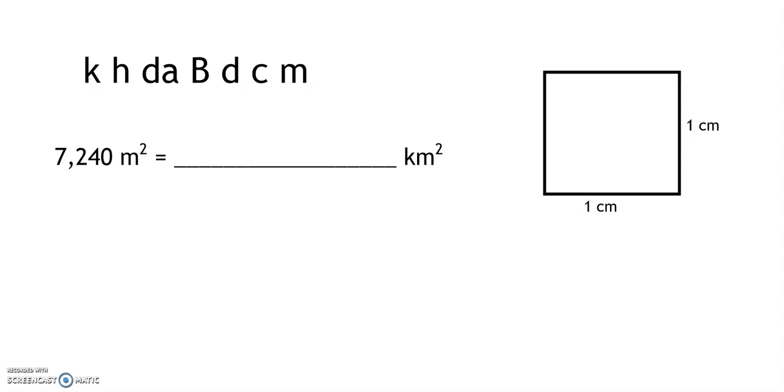What about square units in the metric system? Previously, we learned that it is easier to convert from meters to kilometers or meters to centimeters if we use the acronym King Henry died by drinking chocolate milk.